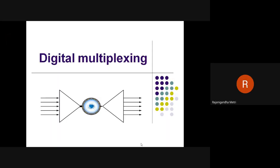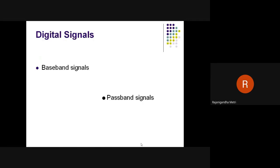Today we are going to study digital multiplexing. As you all know about analog signals and digital signals, here there are two types of digital signals which we are going to see: baseband signals and passband signals.